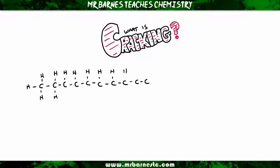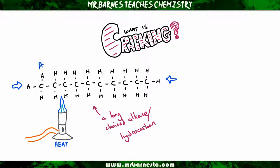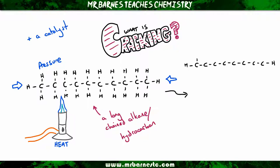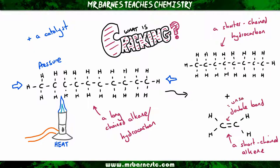Here I've got a long-chained hydrocarbon — it's got 10 carbons and 22 hydrogens — therefore it makes it a hydrocarbon because there's only hydrogen and carbon there. If I take it and apply heat and pressure and use a catalyst, I can break it down into a shorter-chained alkane. For example, I have octane, which has got 8 carbons and 18 hydrogens. It also breaks it down into a shorter-chained alkene. Here I've got an alkene because it's got a double bond in — it's C2H4, and that is ethene. Just remember, the fact that it's got a double bond makes it unsaturated.